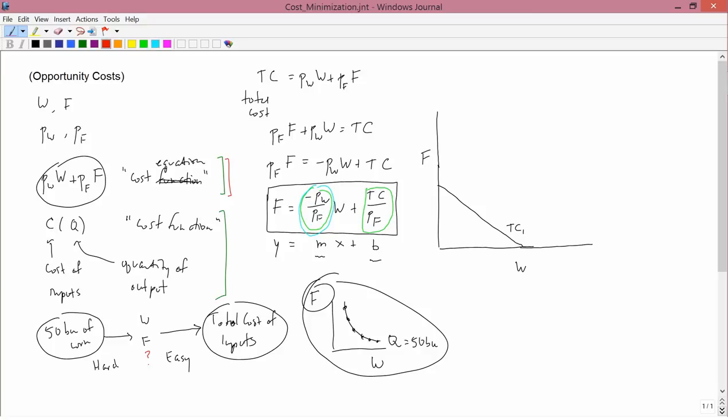The slope is minus Pw over Pf. And one thing that perhaps I should have said earlier, is that these are fixed. In other words, what we're going to assume is that Pw and Pf are fixed, which means the firm can't control them. The firm has no power over them. Pw and Pf are given by the marketplace.